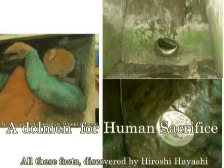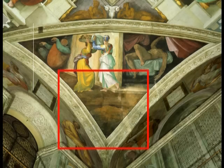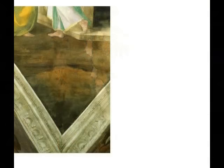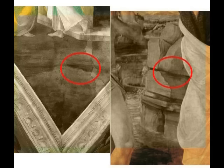なぜこんなところに穴あきドルメンがあるかということですね。左のこの頭のように見える丸い部分は、穴あきドルメンを内側から見た様子ということになります。この絵の赤い枠で囲った下の部分を見てください。ここには穴あきドルメンが描かれています。右はベロッキオとレオナルドの合作と言われているキリストの洗礼の中に描かれている穴あきドルメンです。まったく同じです。